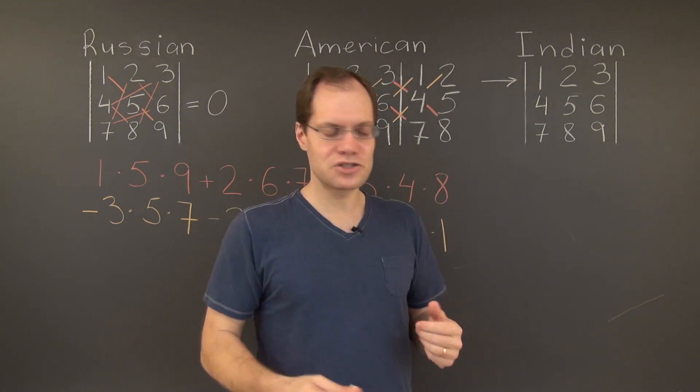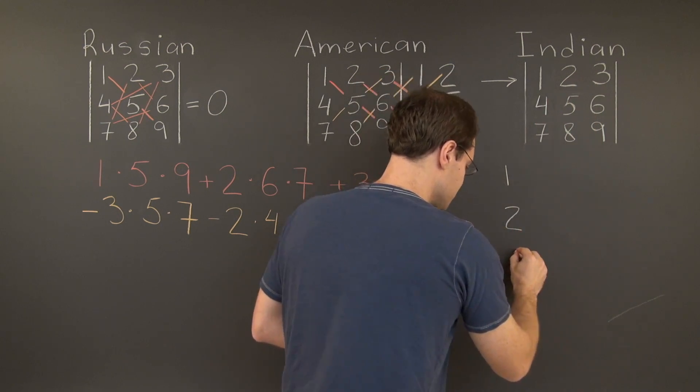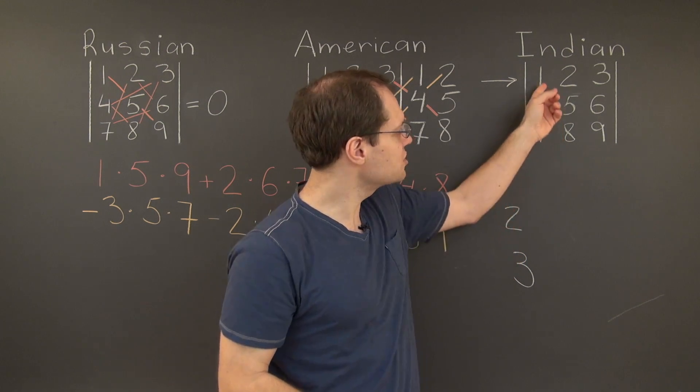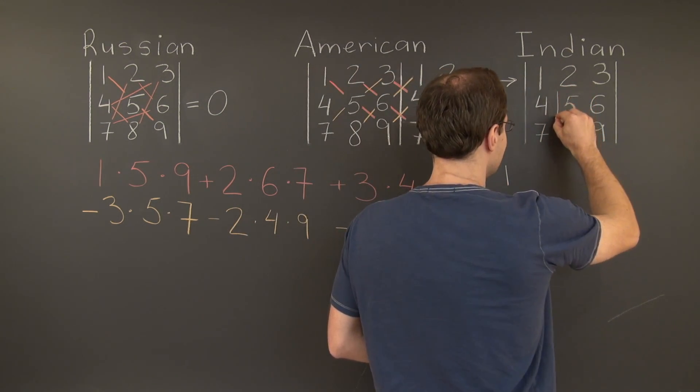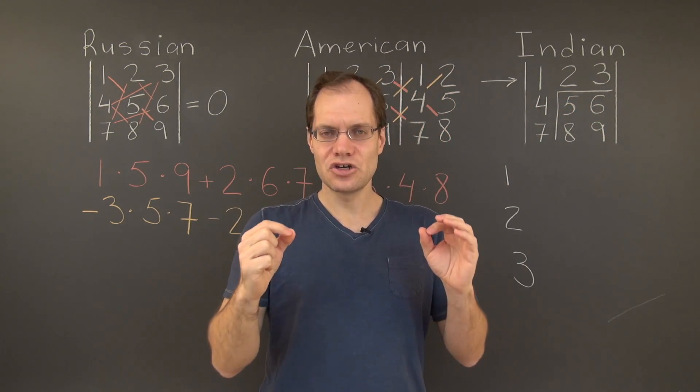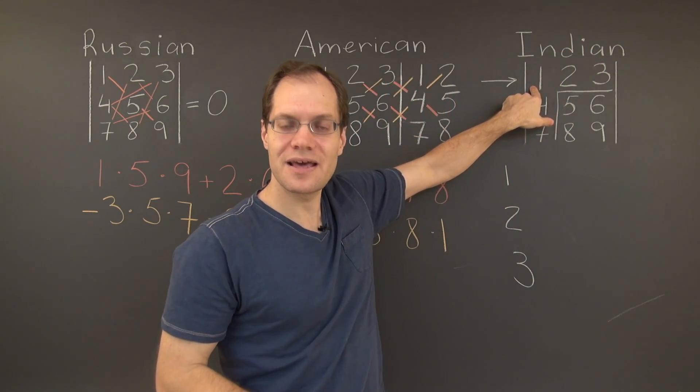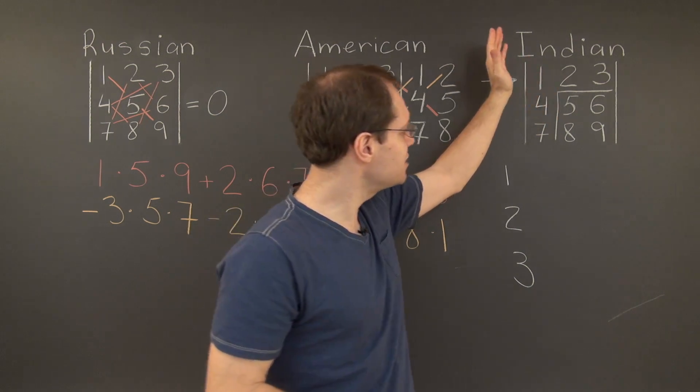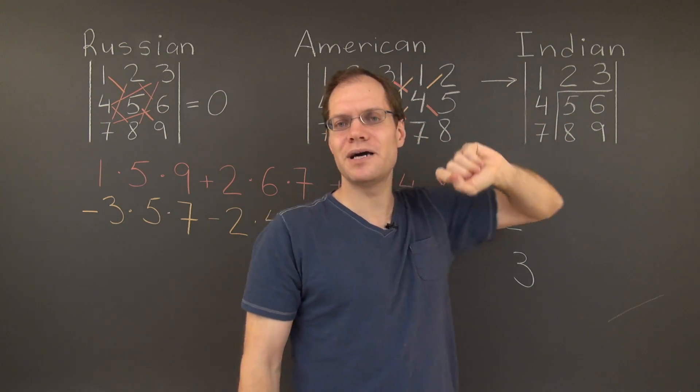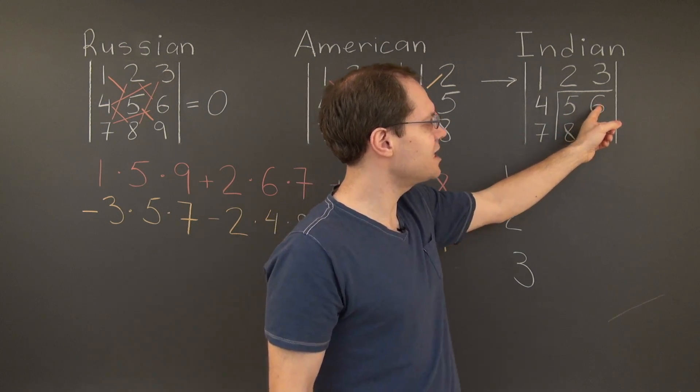So there will be a term corresponding to the 1, and another term corresponding to the 2, and another term corresponding to the 3. And the 2x2 determinant that corresponds to the 1 is this one right here. The way to come up with this 2x2 determinant is to mentally cross out the column and the row that the pivot, as it will come to be called, is in. So in this case, we cross out the first column and the first row, and we're left with this simple 2x2 determinant. And of course, the value of this determinant is 5 times 9 minus 8 times 6.